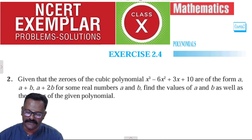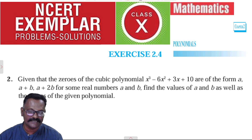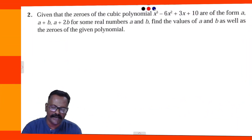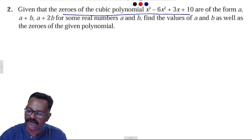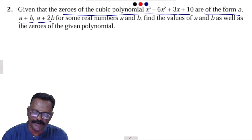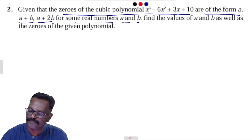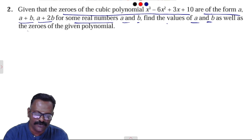Hi students, welcome to my channel Study Care. Class 10 NCERT Exemplar, Chapter 2 Polynomials, Exercise 2.4, second sum. Given that the zeros of the cubic polynomial are of the form a, a plus b, a plus 2b for some real numbers a and b. Find the values of a and b, as well as the zeros of the given polynomial.